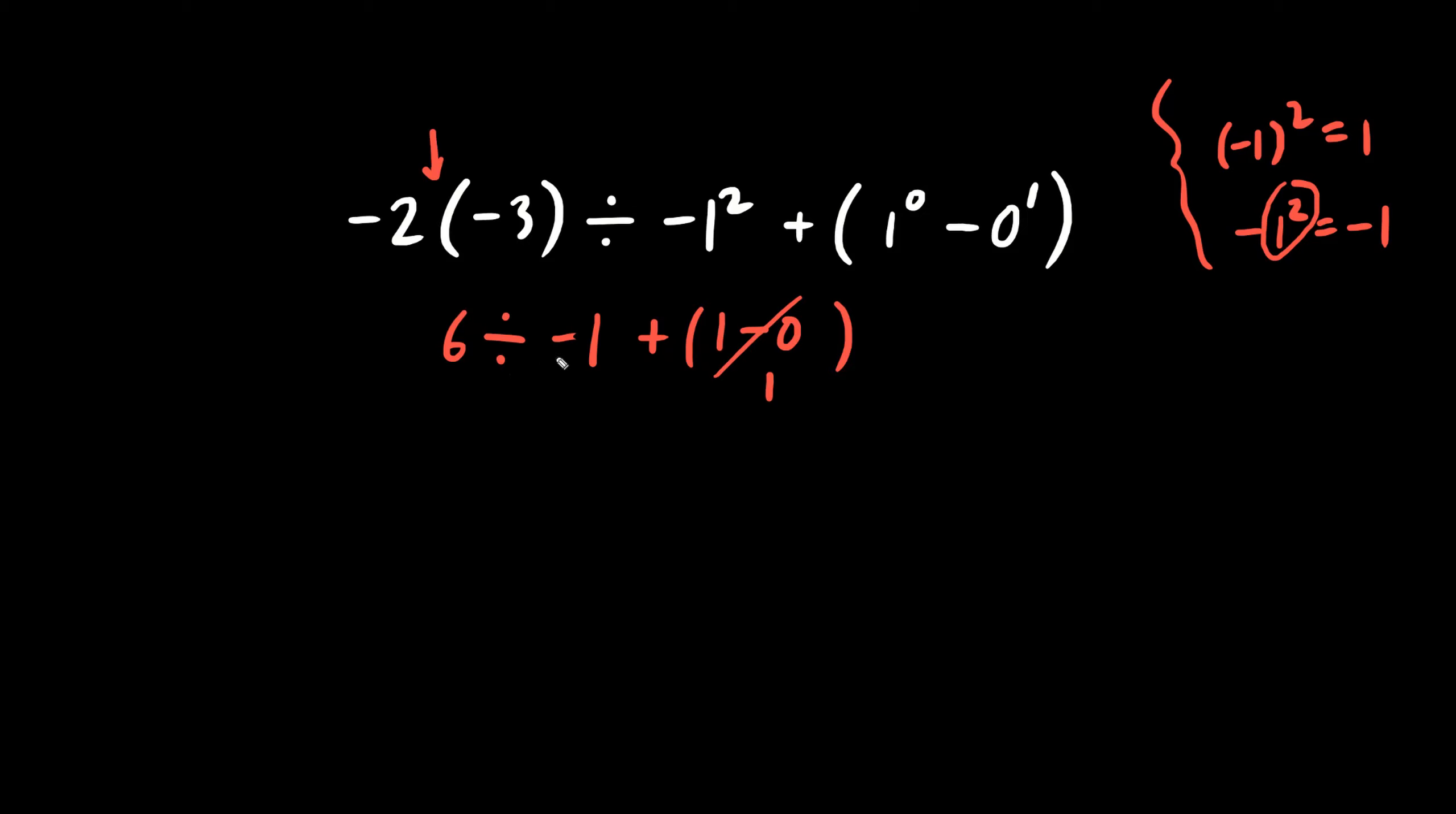So we have six divided by negative one, which is negative six plus one. So the final result is negative five.